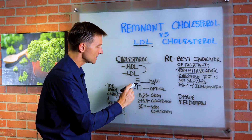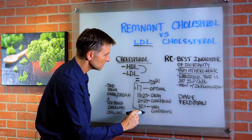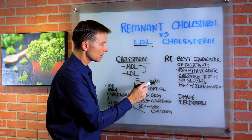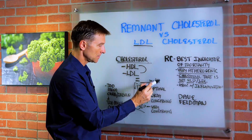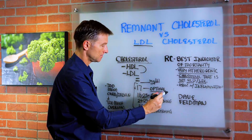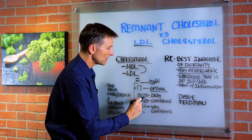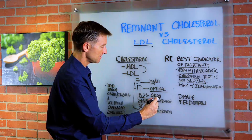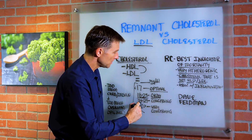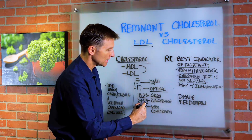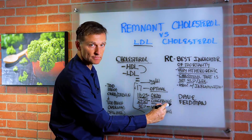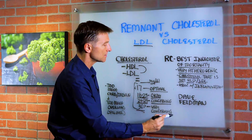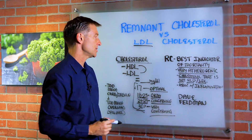And there's a rating system. If it's 17 or less milligrams per deciliter, it's optimum. If it's 18 to 23, it's okay. If it's between 24 and 29, it's concerning. And if it's 30 or greater, it's very concerning.